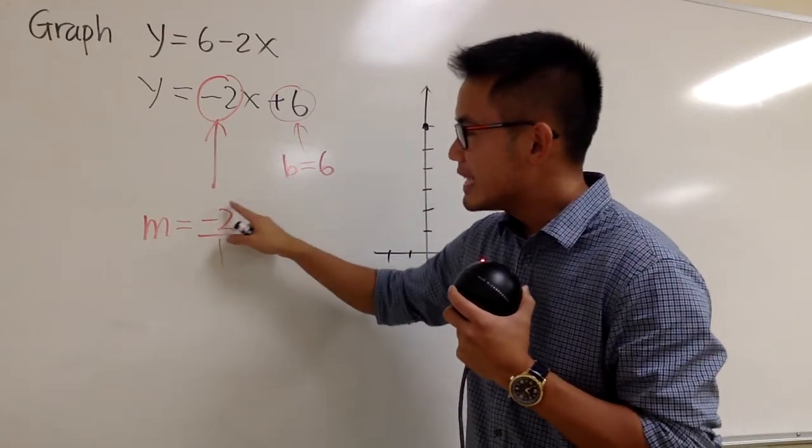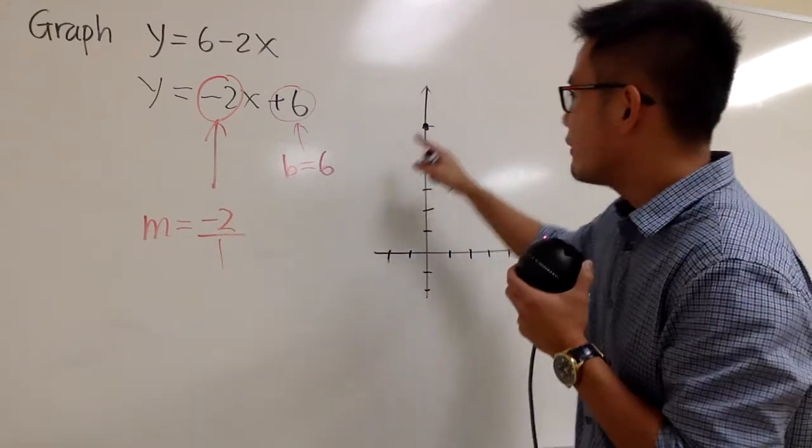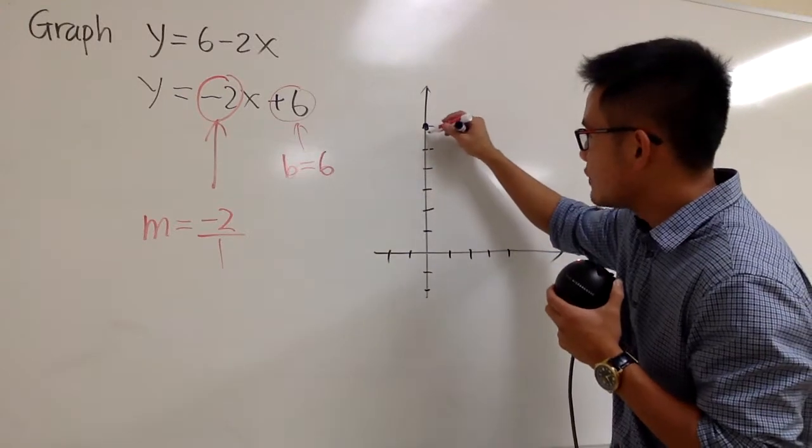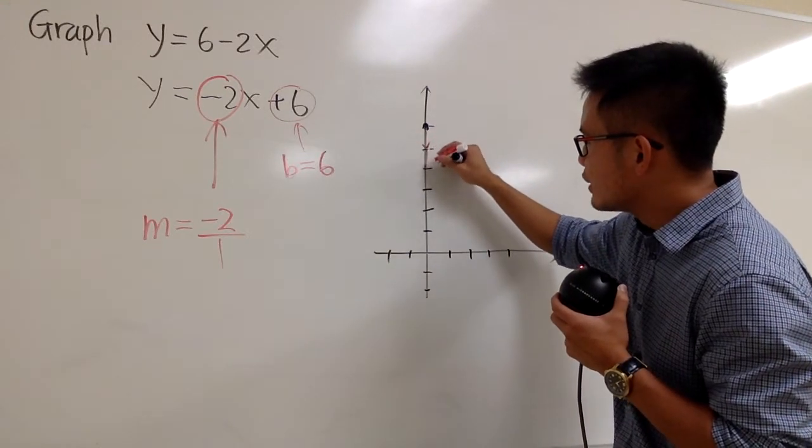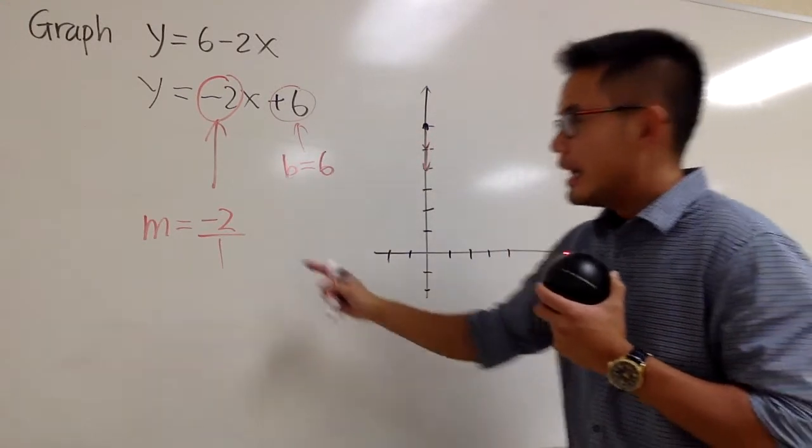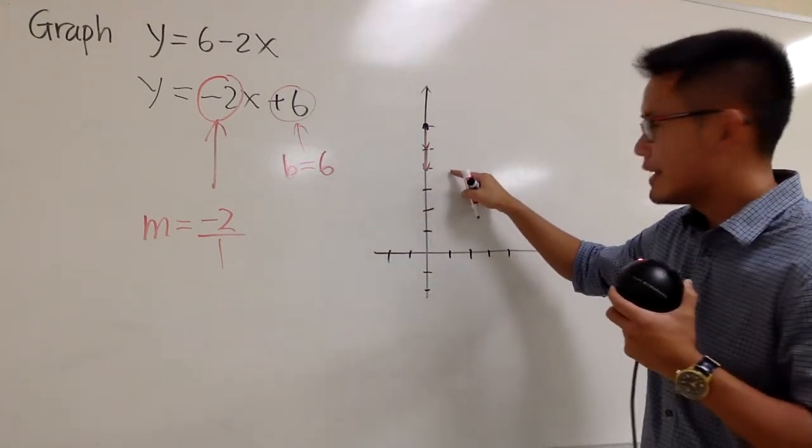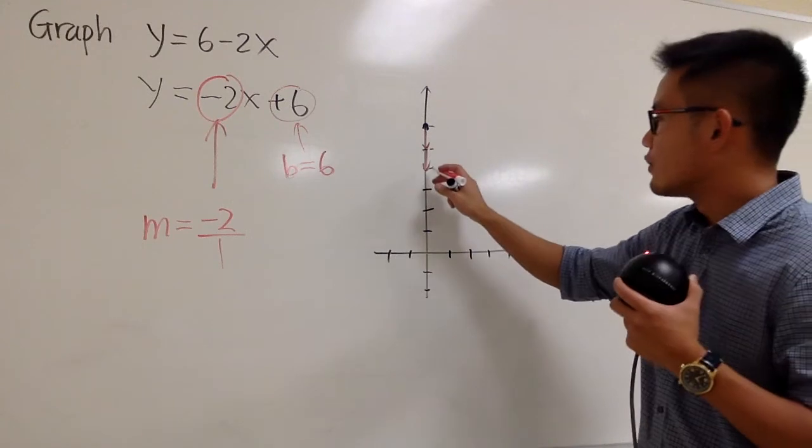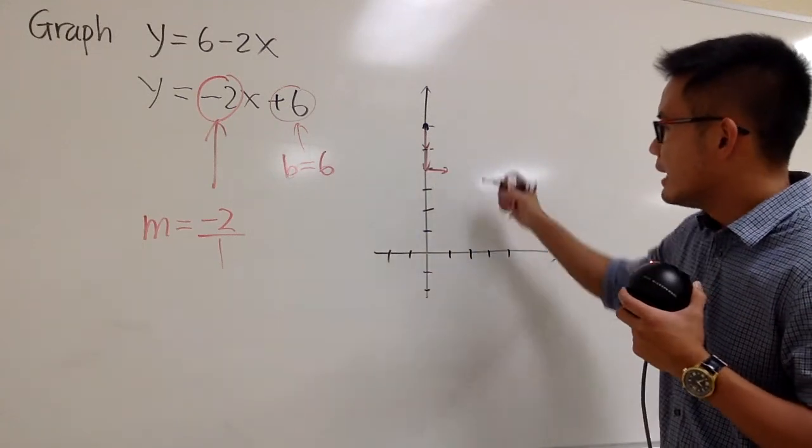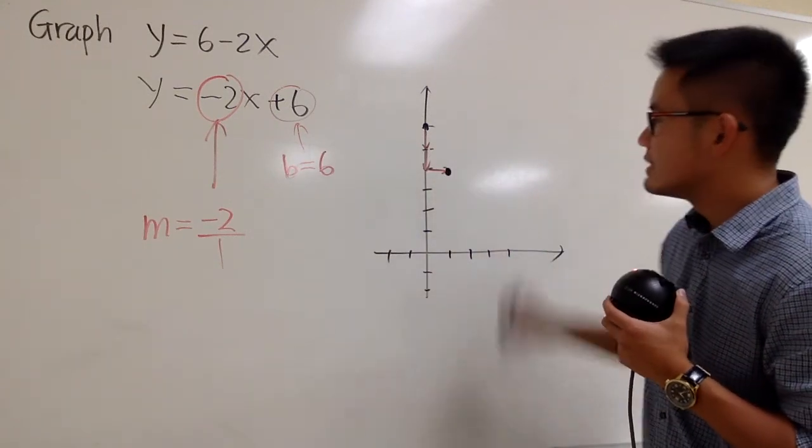Now, this negative 2 on the top tells us we have to go down twice. So I will count it for you. Going down once, going down twice. And this 1 will tell me to move to the right. From here to the right one time. So from here, I will move to the right one time. And this is how I can get my second point.